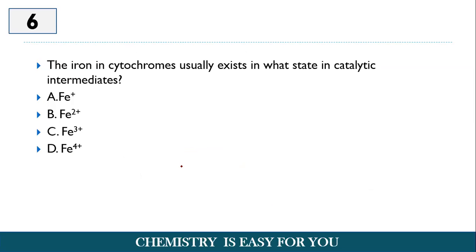Now, next question is question number six. Here, the iron in cytochromes usually exist in what catalytic intermediate? What state in their catalytic intermediate?